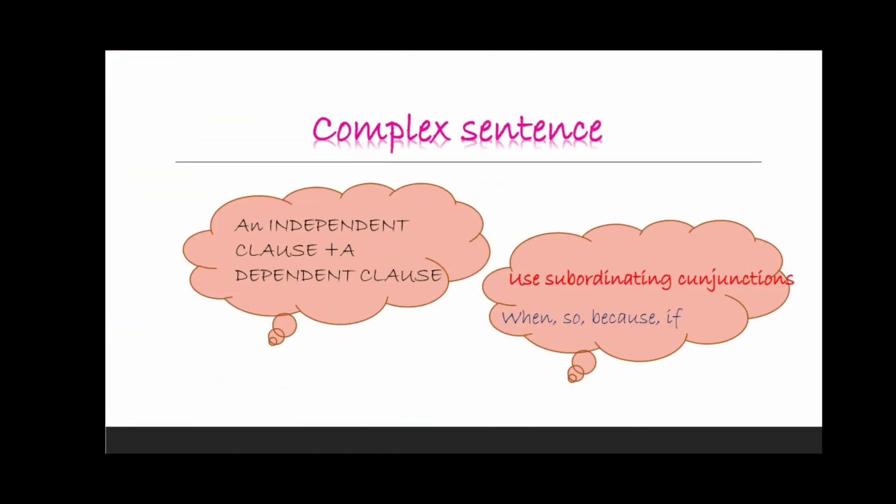The next one is complex sentence. In a complex sentence we have an independent clause and a dependent clause. We have two clauses again but the difference here is that one independent and one dependent. They can be combined using subordinating conjunctions like when, so, because, and if. So when one independent clause and a dependent clause are combined together using subordinating conjunctions they form a complex sentence.